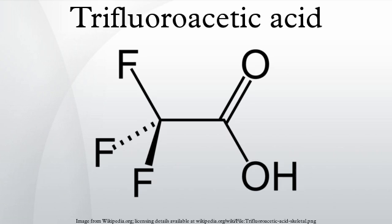An older route to TFA proceeds via the oxidation of 1,1,1-trifluoro-2,3,3-trichloropropene with potassium permanganate. The trifluoro-trichloropropene can be prepared by Swartz fluorination of hexachloropropene. TFA occurs naturally in seawater, but only in small concentrations.